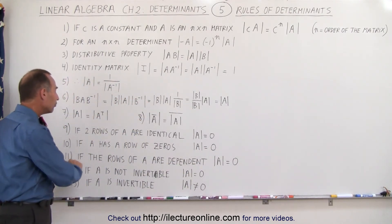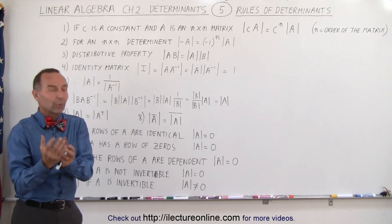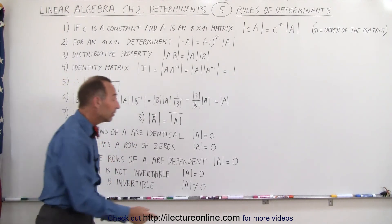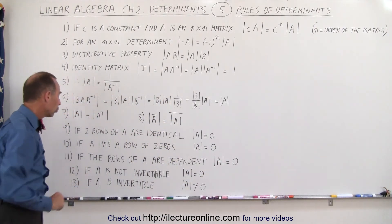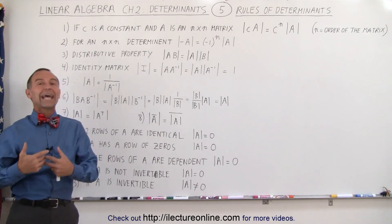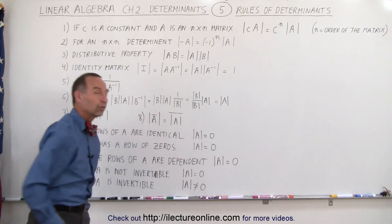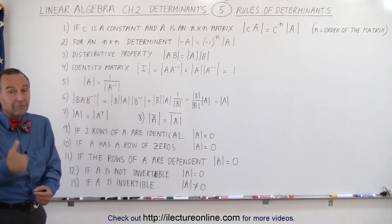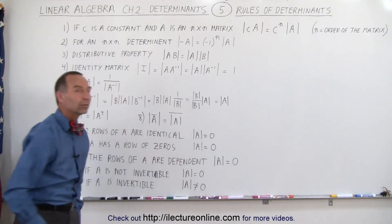Rule eleven: if the rows of matrix A are dependent — we'll show the definition and example — the determinant of that matrix will also be equal to zero. Rule twelve: if matrix A is not invertible, meaning it does not have an inverse, then the determinant is also equal to zero. Conversely, if A is invertible, then the determinant will not be equal to zero.